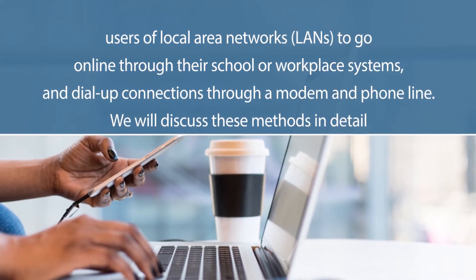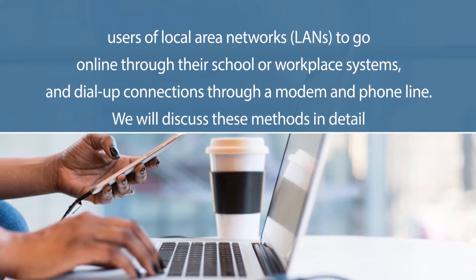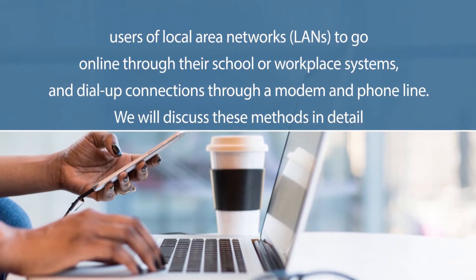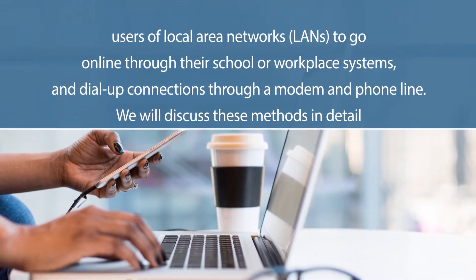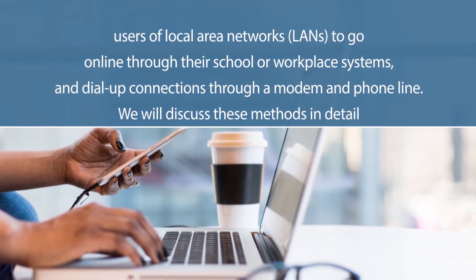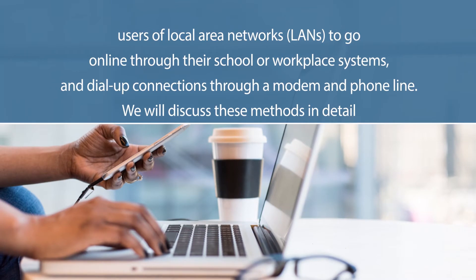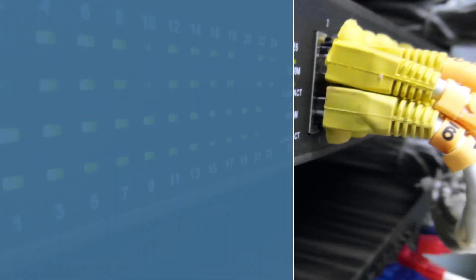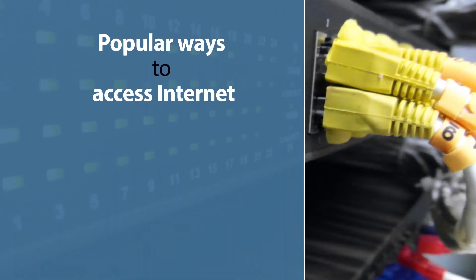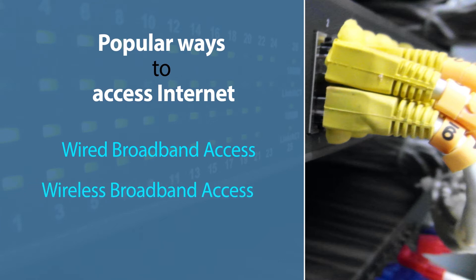Initially, the two primary methods of accessing the internet were through a direct connection allowing users of local area networks to go online through their school or workplace systems, and dial-up connections through a modem and a phone line. There are two popular categories: wired broadband access and wireless broadband access. The most important distinction is wired versus wireless.